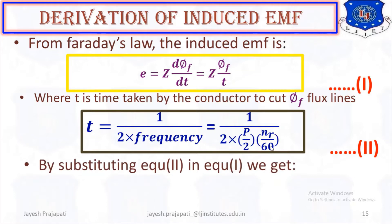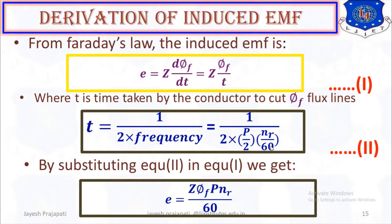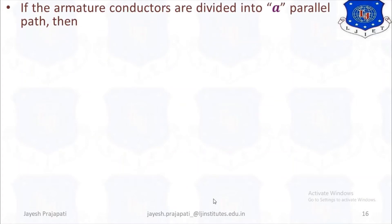By substituting equation 2 into equation 1, we get E equals Z·Φf·f, where t is replaced by P divided by 2·NR over 60. This simplifies to E equals Z·Φf·f times 2·NR divided by 60, giving us equation number 3.